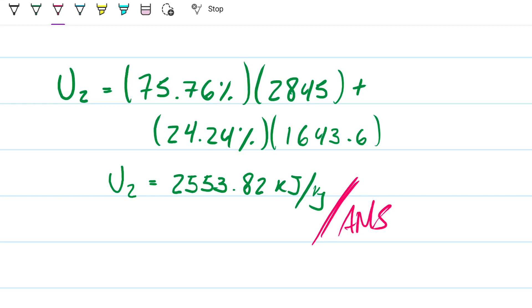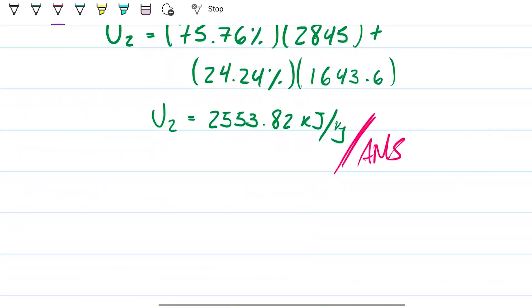And the specific internal energy is 2553.82 kilojoules per kilogram. If I wanted to, I could multiply U2 by the mass that we happen to know is 3.3. And that's going to give me about 8.4 megajoules of energy. They're specifically asking for this one. So this is just FYI.